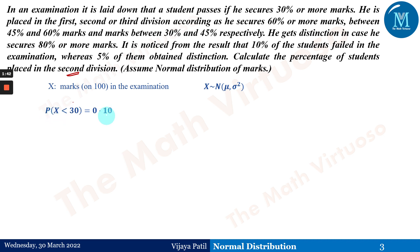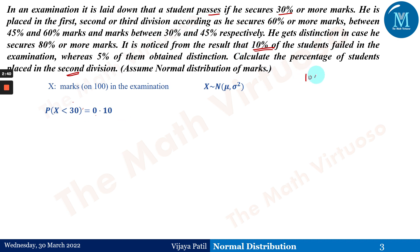The probability of X less than 30 is given as 0.10, because 10% of students fail the examination. If a student passes, he must secure 30% or more marks; those getting less than 30% are failing. So P(X < 30) = 0.10, which is 10/100 = 0.10.